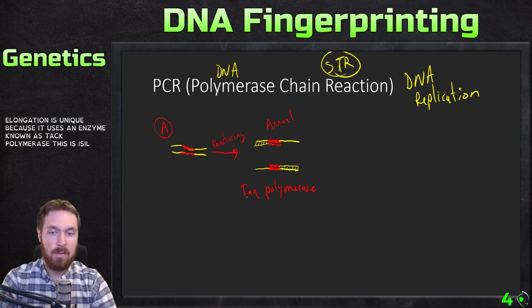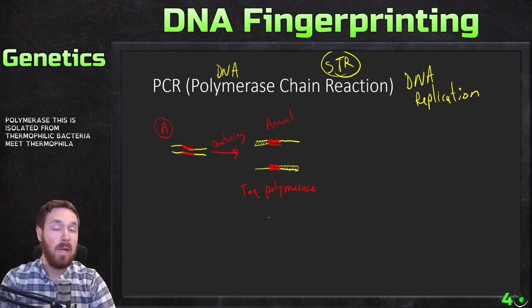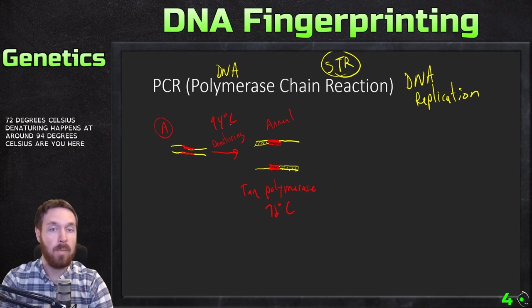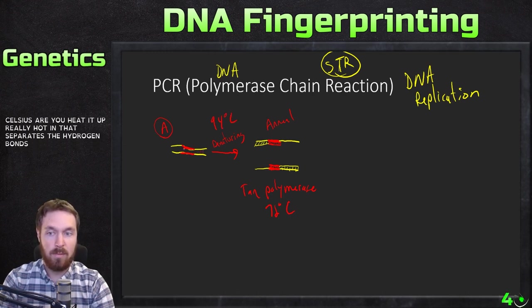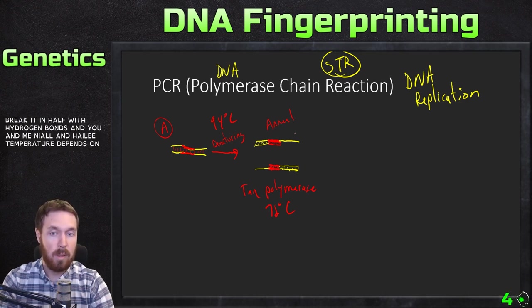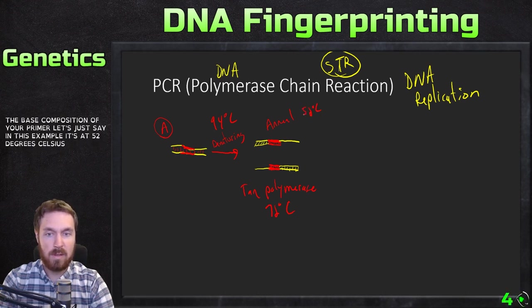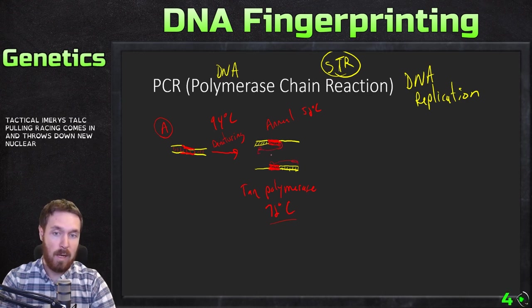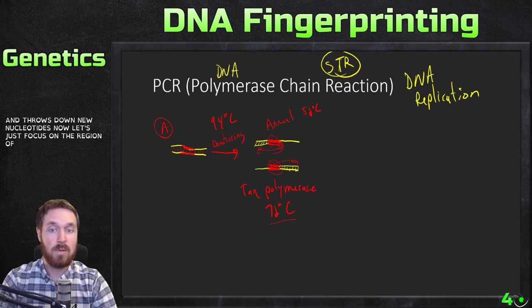Taq polymerase is isolated from thermophilic bacteria — thermophilic meaning heat-loving. Taq polymerase works best at 72 degrees Celsius. Denaturing happens at around 94 degrees Celsius — you heat it up very hot to separate the hydrogen bonds between the two DNA strands. Annealing temperature depends on the base composition of the primer, for example 52 degrees Celsius. You attach the primers, then increase the temperature to 72 degrees, which activates Taq polymerase.